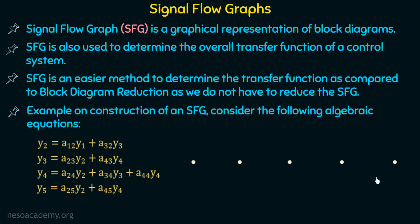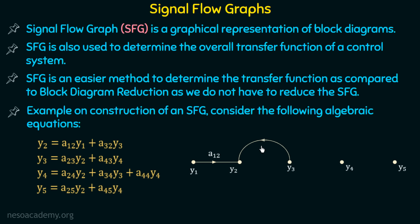For that, let us consider 5 nodes named y1, y2, y3, y4, and y5. Looking at the first equation, y2 = a12·y1 + a32·y3, y1 and y3 are independent variables and y2 is a dependent variable. To plot this equation graphically, we relate y2 with y1 and y3 using the equation y2 = a12·y1 + a32·y3.